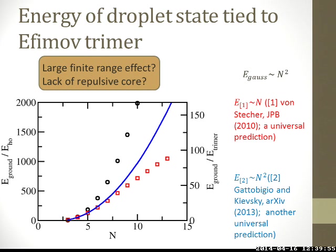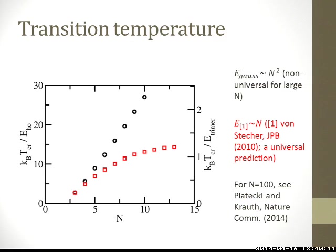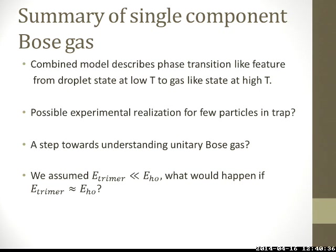To conclude for the single-component Bose gas: we find a simple combined model that can describe this phase transition-like feature — from a droplet state at low temperature to a gas-like state at high temperature. As long as the ground-state trimer energy is fed into the model, we can calculate the critical temperature. It could be that experimentally, for a few particles in a trap, the ground-state trimer can be probed and this phase transition feature might be explored.